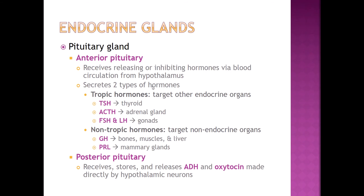Growth hormone is, of course, for growth. The posterior pituitary, again, is essentially an extension of the hypothalamus, and it stores the ADH and oxytocin made by the hypothalamus, releasing them when needed. ADH — antidiuretic hormone — is a hormone that helps us conserve water. Oxytocin does a couple of different things: it causes ejection of milk from the mammary glands, contraction of the uterus during labor and delivery, and it's also kind of the love hormone — when you're falling in love, your brain is essentially flooded with oxytocin.